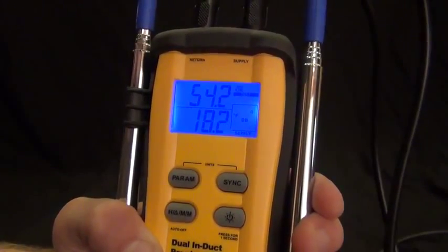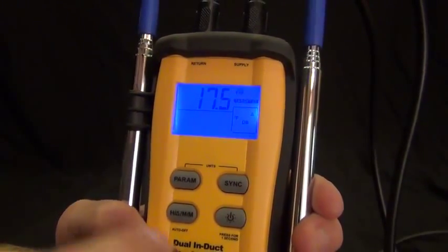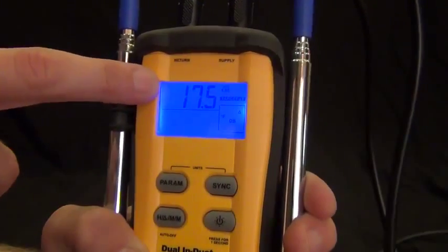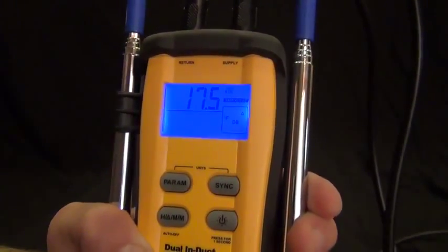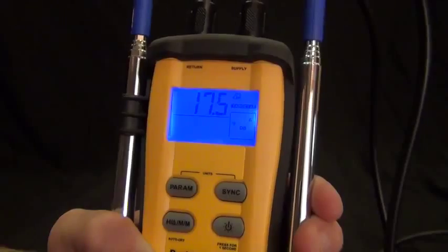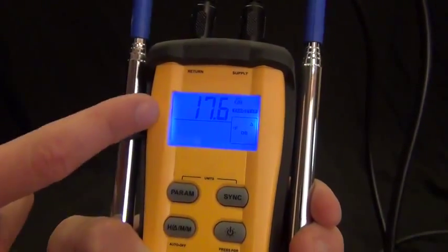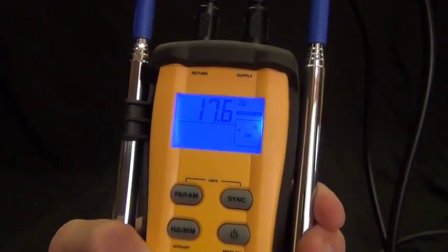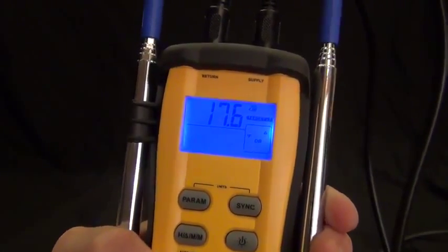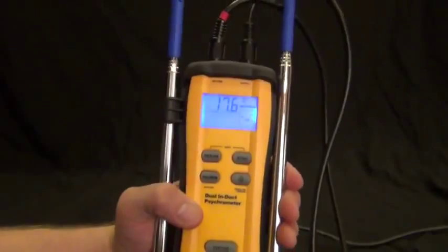Now on the target delta T, I can put it up here and this is basically saying based on the conditions I'm giving it of the return wet bulb and the return dry bulb, my temperature drop should be 17 degrees. So those two tests are roughly, they're basically the same test, just formatted differently.